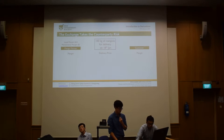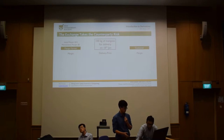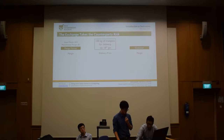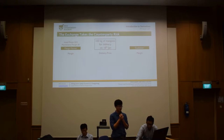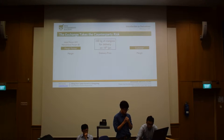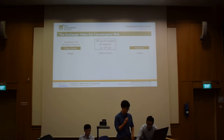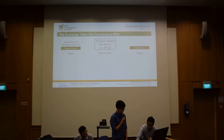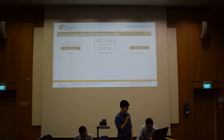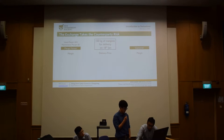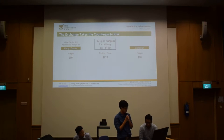The other way the exchange protects itself against losses is to require each party to set aside money in what is called a margin account. This money covers unexpected price changes. Let's look at the futures margin mechanics. Suppose the contract terms are 100 kilos of mangoes for delivery on the 18th of January, with an initial margin of $10 and a maintenance margin of $5, and a delivery price of $120.